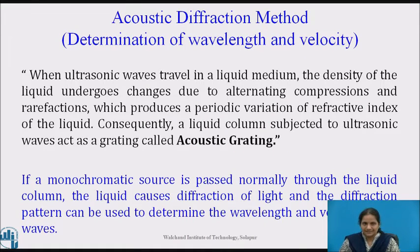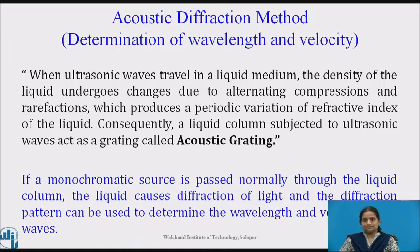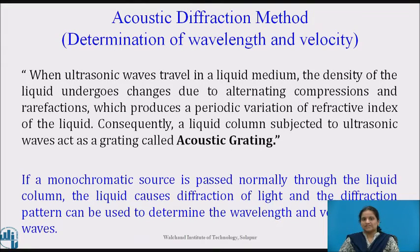The next method, used to determine the wavelength and velocity, is known as the acoustic diffraction method. When ultrasonic waves travel in a liquid medium, the density of the liquid undergoes changes due to alternating compressions and rarefactions, which produces a periodic variation of the refractive index of the liquid. Consequently, a liquid column subjected to ultrasonic waves acts as a grating, which is called an acoustic grating. If a monochromatic source is passed normally through the liquid column, the liquid causes diffraction of light, and the diffraction pattern can be used to determine the wavelength and velocity of the waves.